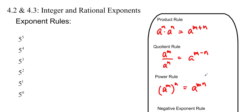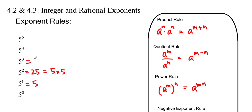So these are actually constructed as follows. If you look at these 5s, we can start filling them in. 5 to the 1 is equal to 5. 5 squared is 25, which is 5 times 5. 5 cubed is 125. 5 to the 4 is 625. And 5 to the 5 is 3125.